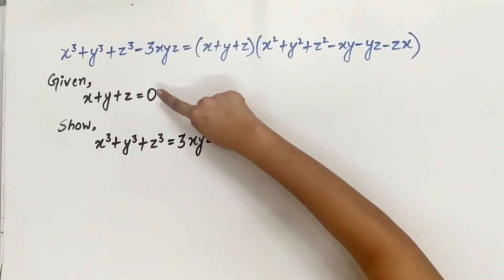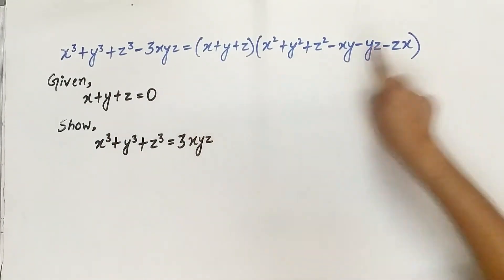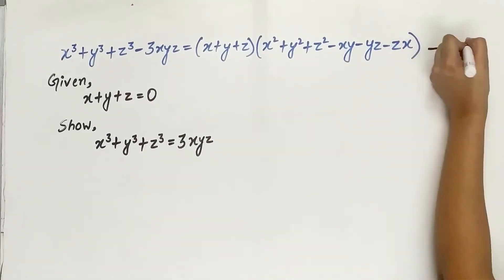Substitute the value of x plus y plus z in the identity. Let it be equation 1.